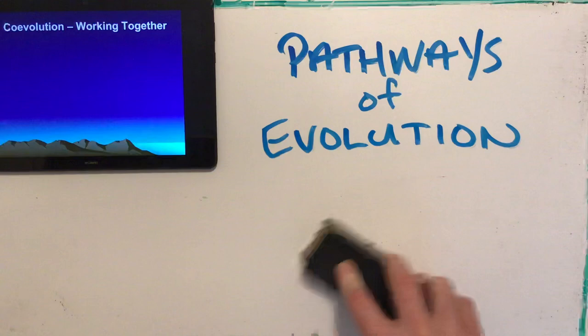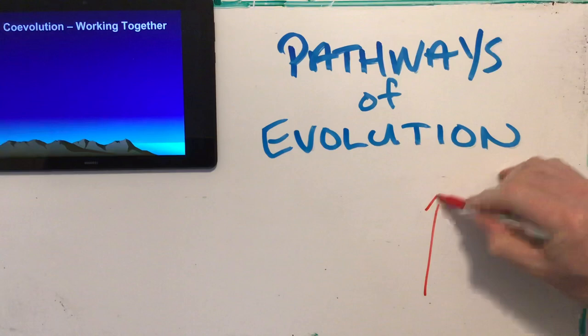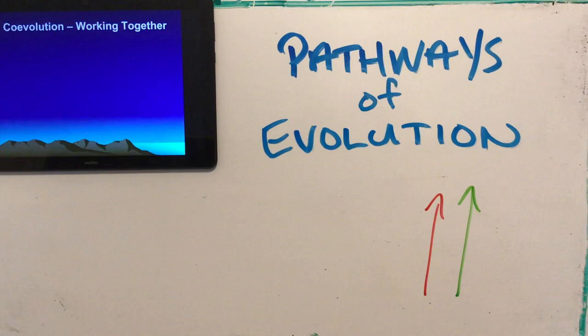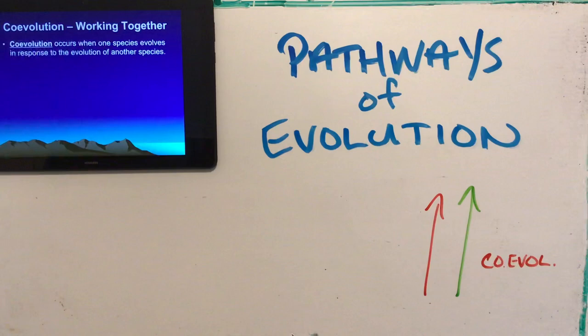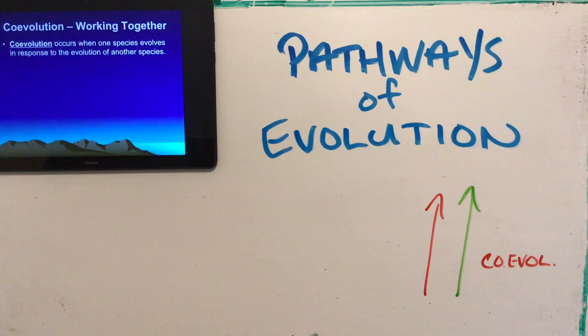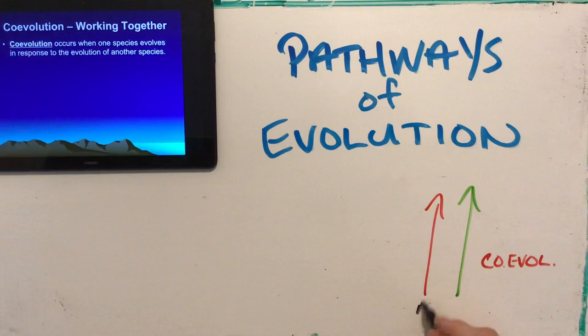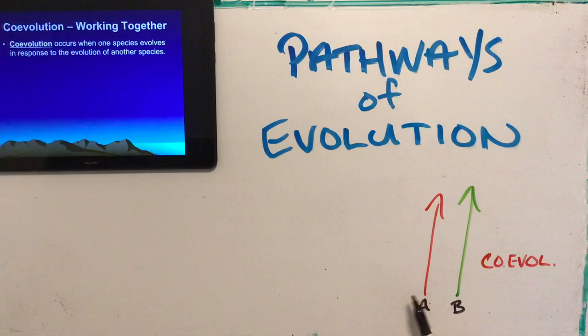Coevolution is our last pathway. It occurs when one species evolves in response to the evolution of another species. We have species A and species B co-evolving — if A develops a trait, B develops a trait to keep coexisting with A, and if B changes, A changes to meet that. They evolve together, working in tandem.